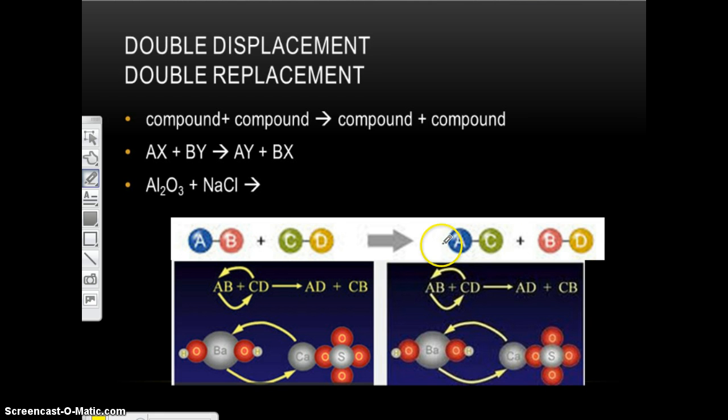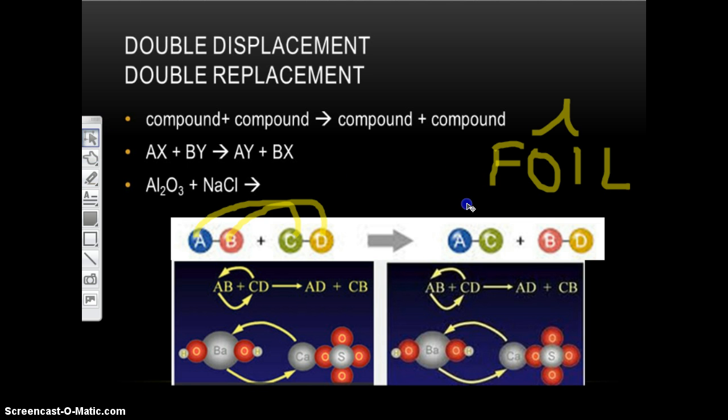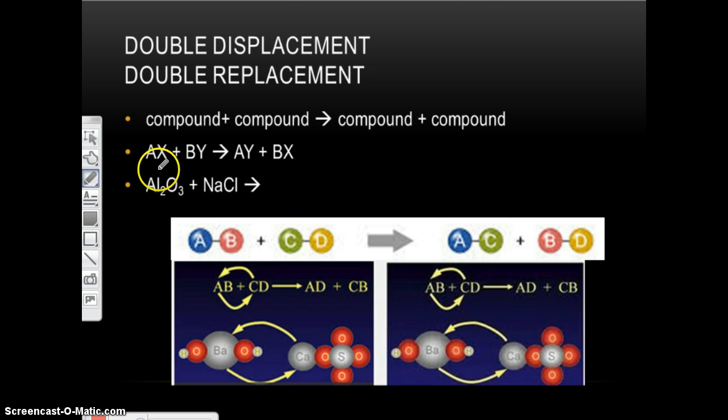So, AX plus BY yields AY plus BX, or AB plus CD. They switch partners. AC plus BD. If you have done FOIL in math class, that's how I always remember it. It's the OY in FOIL, as in the outside ones go together and the inside ones go together. If you haven't done FOIL in math class or it's been so long you don't remember it, don't worry. Okay?